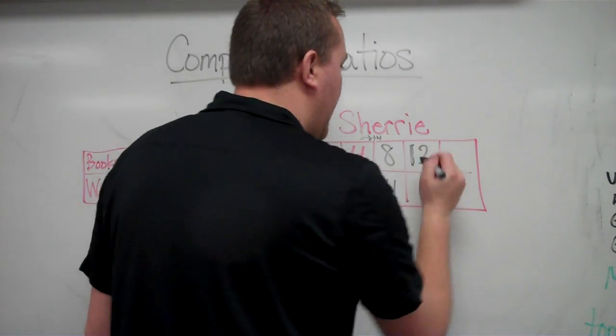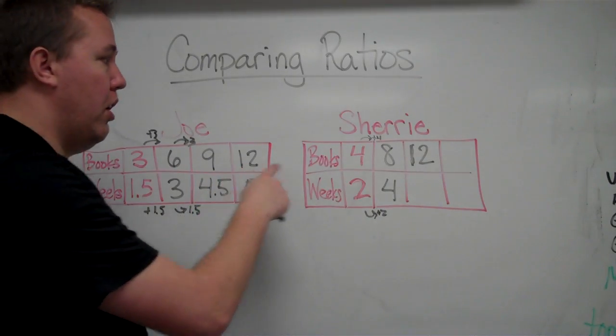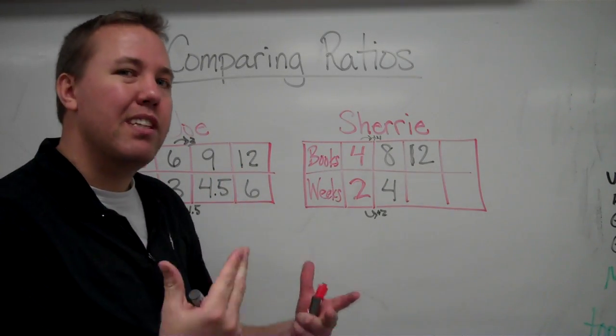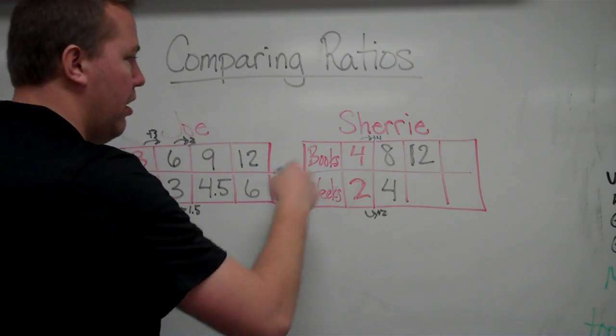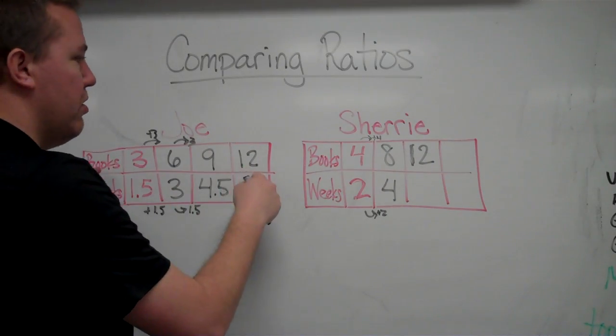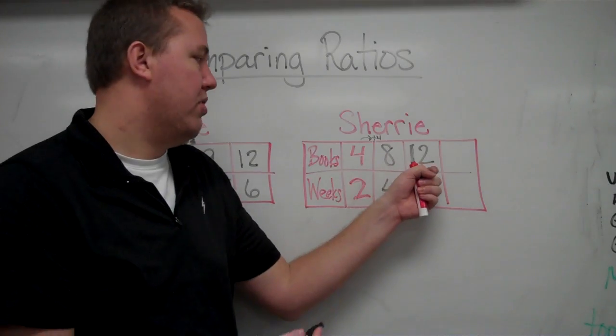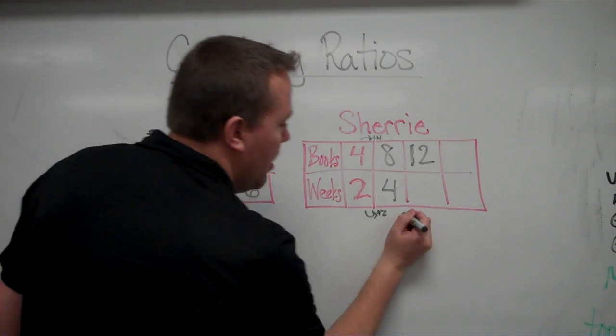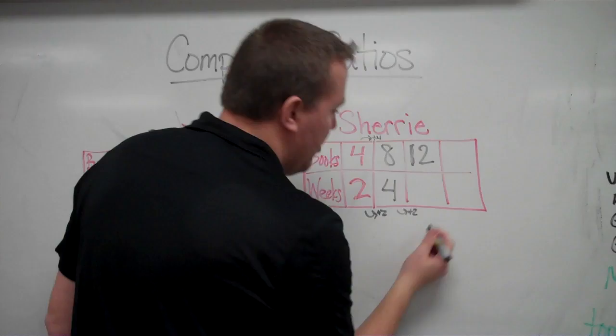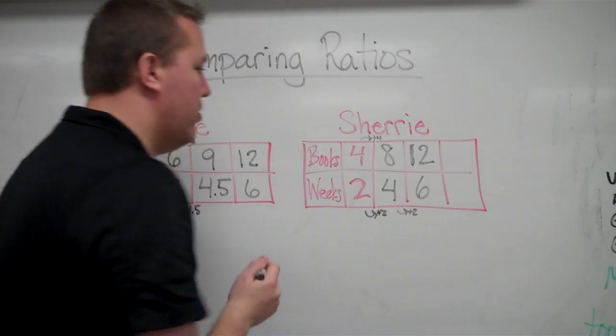Let's move on. And I have a twelve. Excellent. I see a twelve over here with Joe, and I see a twelve. We have the same thing that we can compare. Twelve books. How fast does Joe read twelve books versus how fast does Sherry read twelve books? We will just continue this, plus two, and we have six.